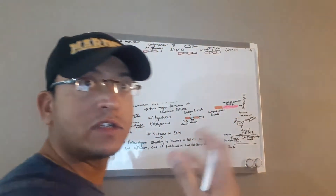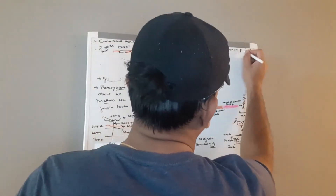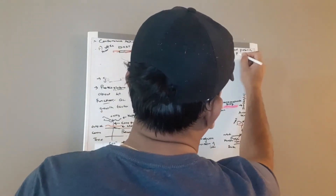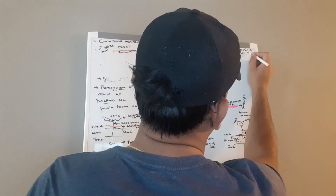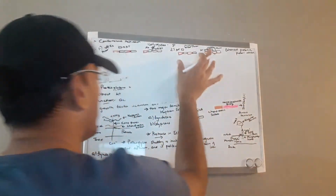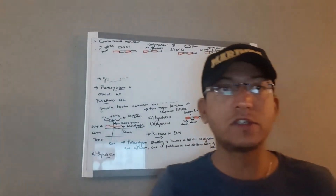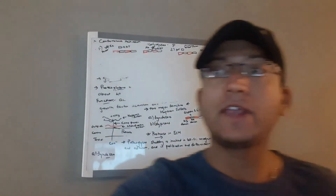The binding of antithrombin and thrombin to two adjacent NS domains of the proteoglycan heparin sulfate brings the two proteins into close proximity, favoring their interaction which inhibits blood clotting. This second mechanism is called enhanced protein-to-protein interaction.